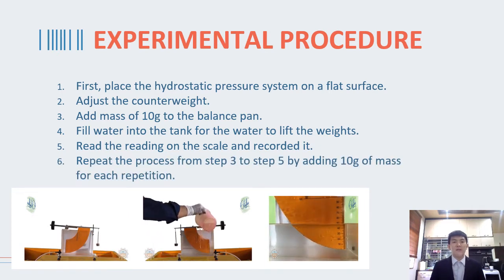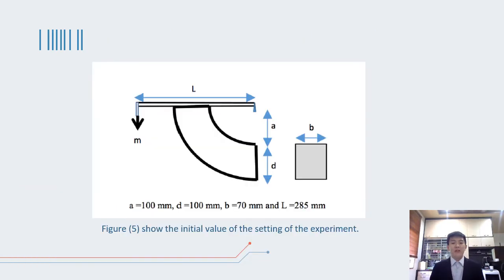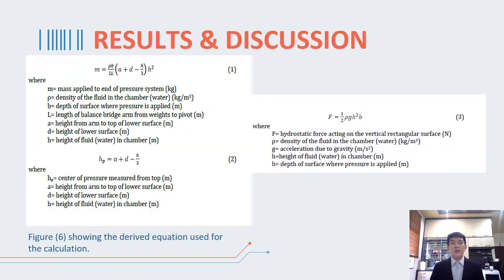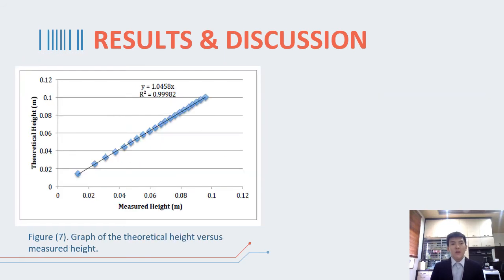Then the water level reading was read and recorded. Repeat the process from step three to step five for four times with adding of mass for each repetition. Figure 5 shows the initial value of setting of the experiment.